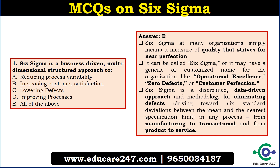Six Sigma is for everything. In any organization, it is a measure of quality that strives to near-perfection. It comes in various forms — in some organizations it will be operational excellence, in others zero defects, and in others customer perfection. Basically, it is a disciplined, data-driven approach where different methodologies are used to eliminate defects near to 6 standard deviations. This technique is applied to reduce defects, improve customer satisfaction, and reduce process variability. It can be applied in manufacturing, product-based, services, or transactional organizations.